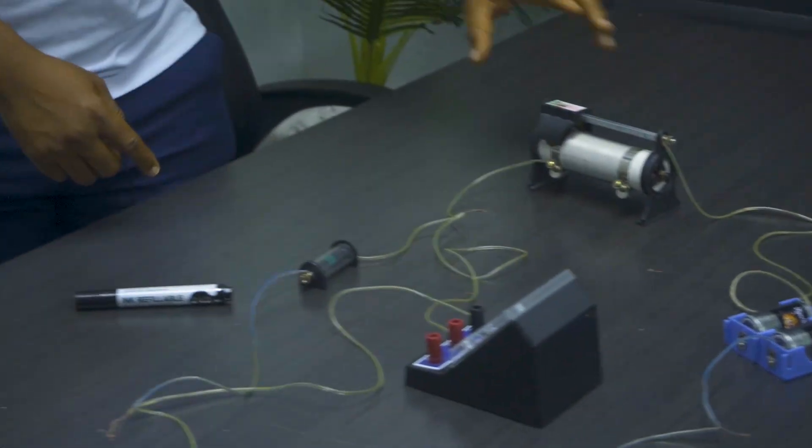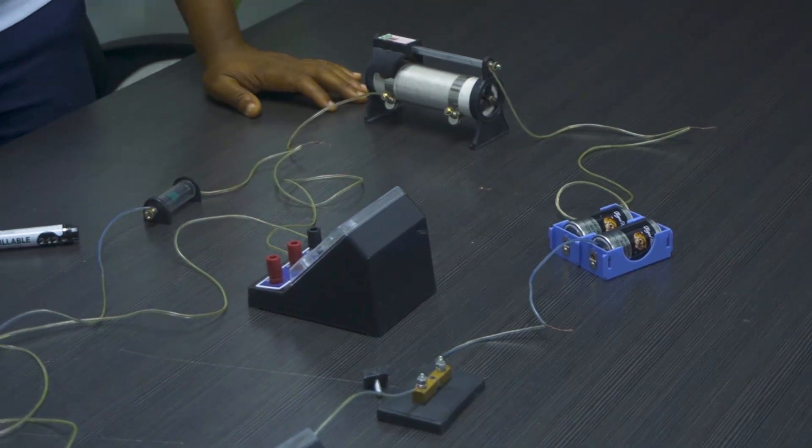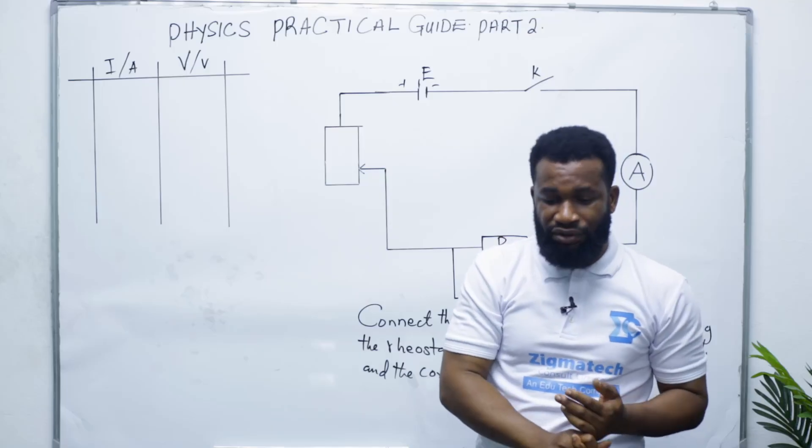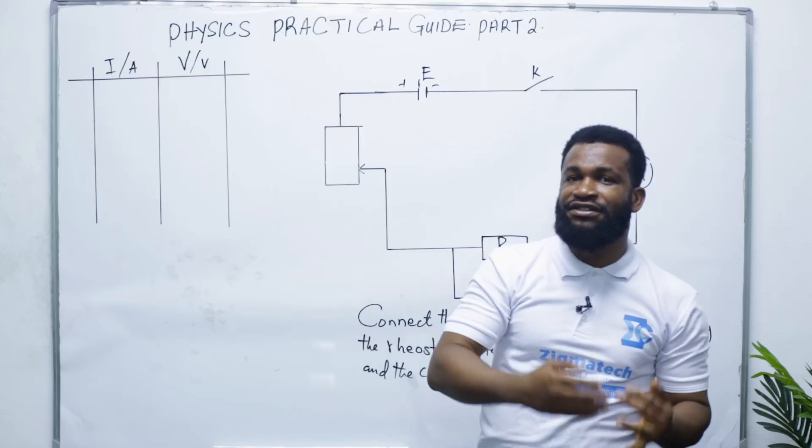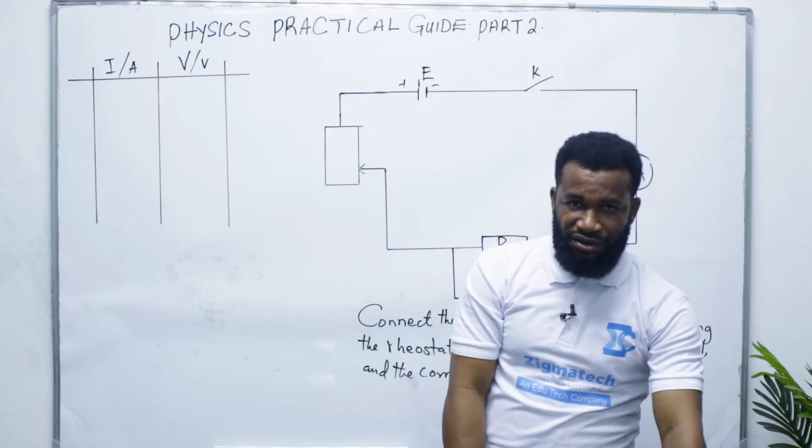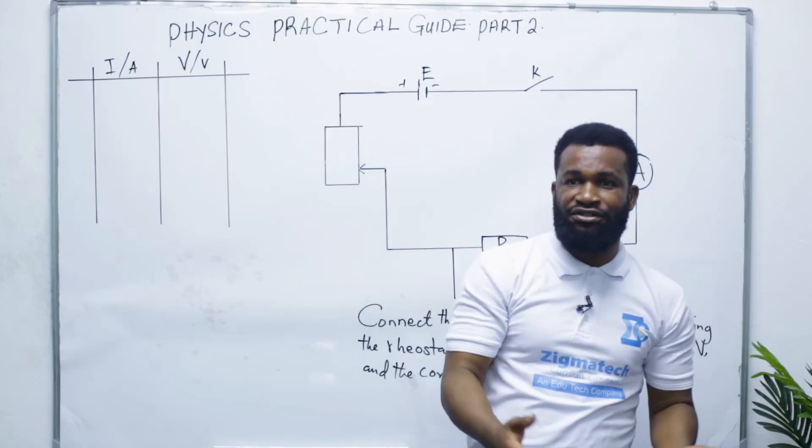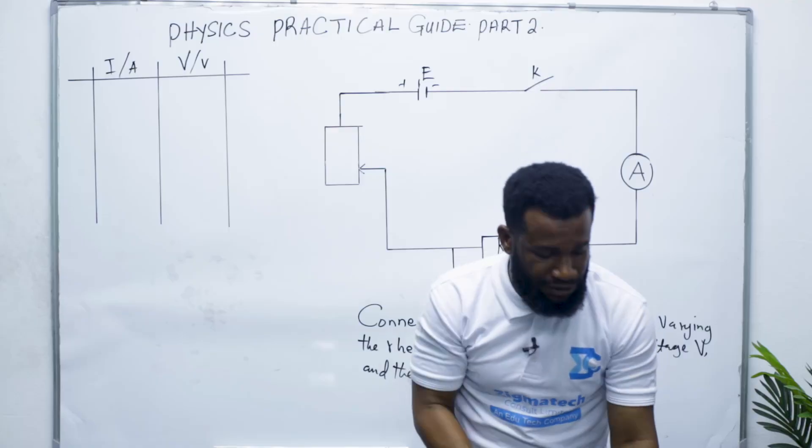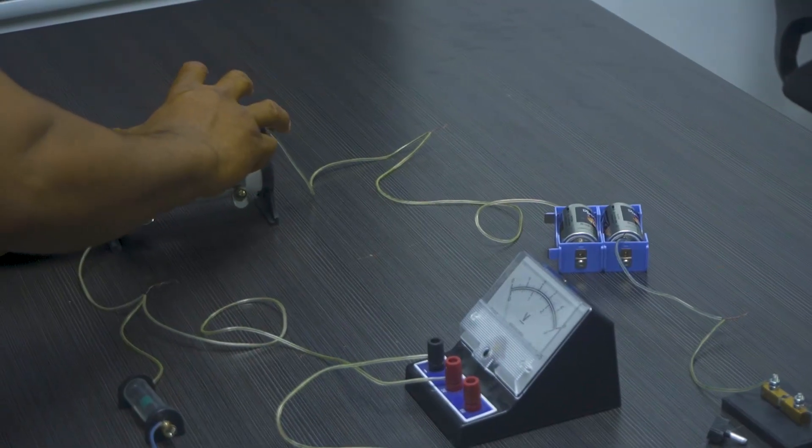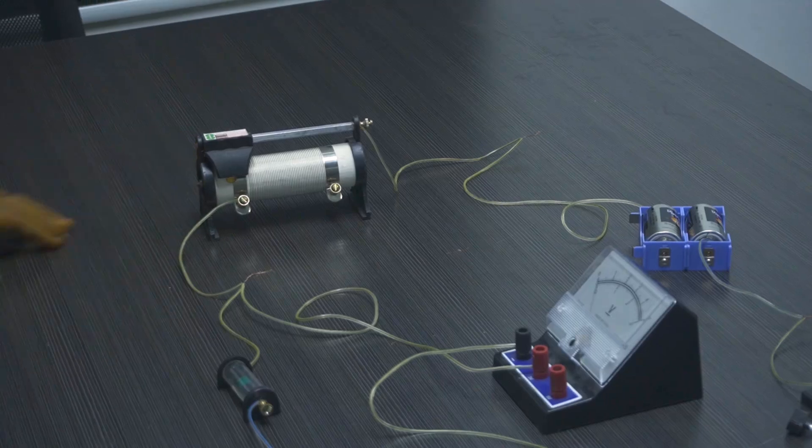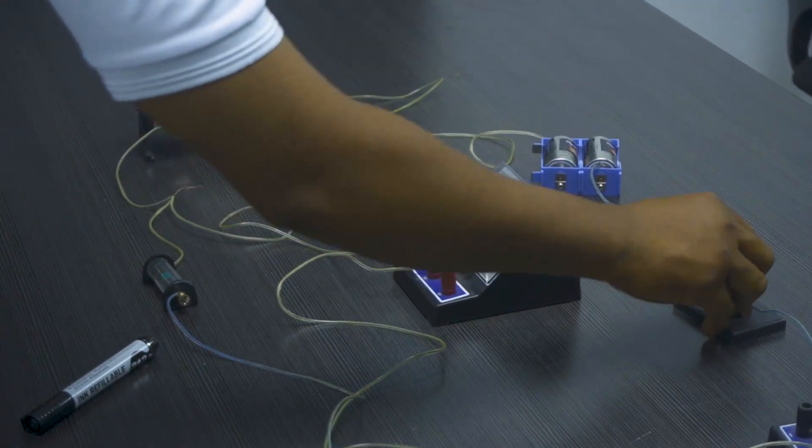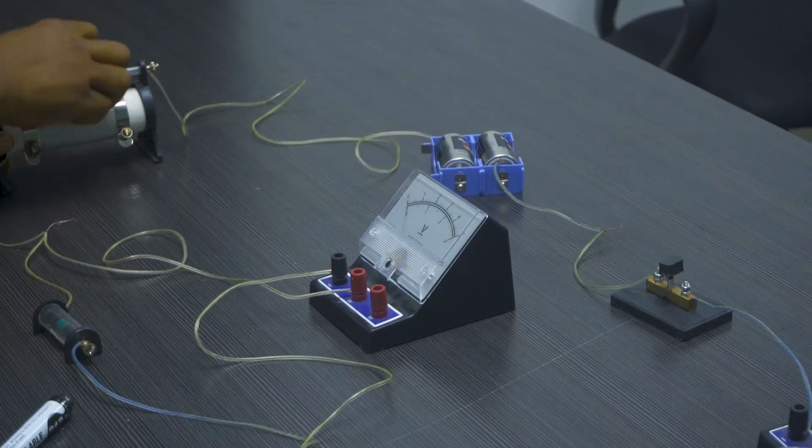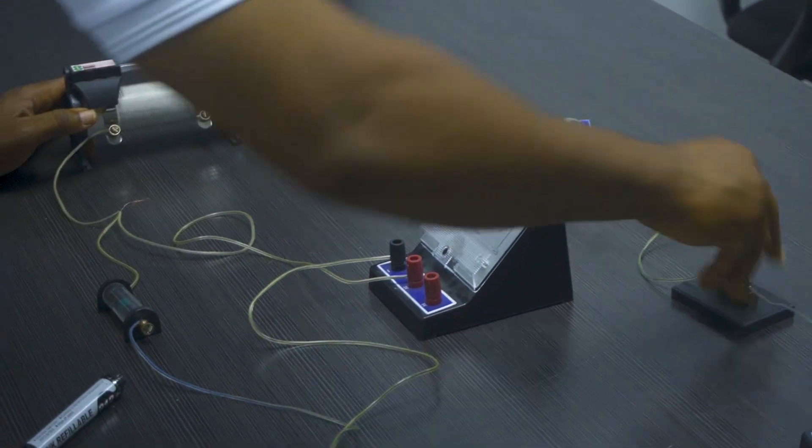From the positive I get to this part of the rheostat, which is this. Then this is the rheostat. The job of the rheostat is to control the current in the circuit by increasing or reducing resistance. Some people say it can increase or reduce current, yes, because whenever resistance is changing, current must surely change. So this is how you fix it. You move it up and down.